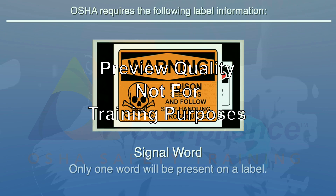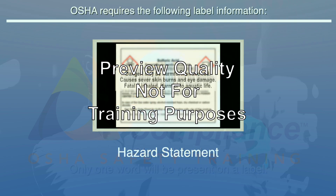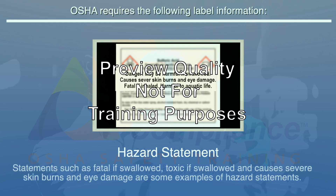Only one signal word will be present on a label — if "danger" is included, then "warning" should not appear. A hazard statement is a phrase describing the nature of the chemical hazard, including where appropriate the degree of hazard. Examples include "fatal if swallowed," "toxic if swallowed," and "causes severe skin burns and eye damage."